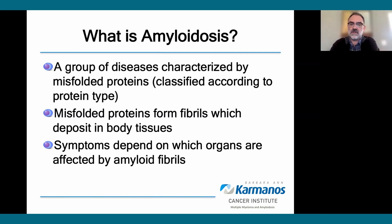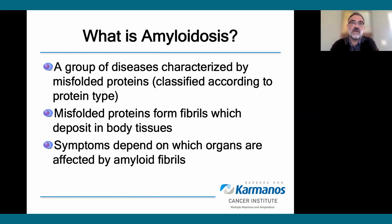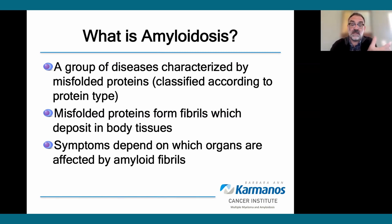It's also important to understand that in one of the most common types of amyloidosis, light chain amyloidosis, the misfolded proteins themselves, while they're soluble, are also toxic to the organs. There's quite a bit of data to show that cardiomyocytes and also kidney mesangial cells are directly affected by the uptake of misfolded light chains.